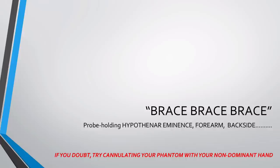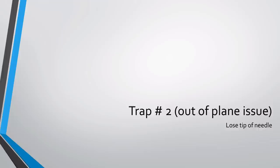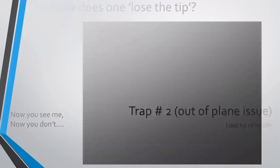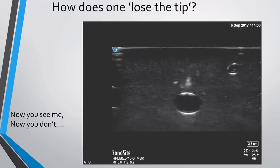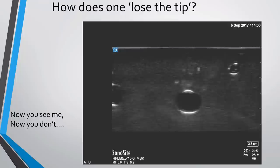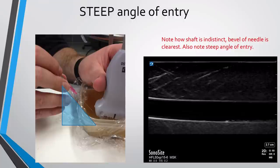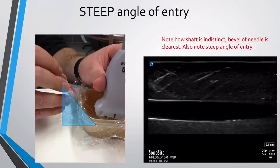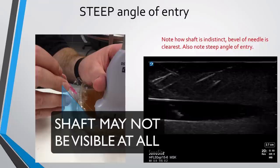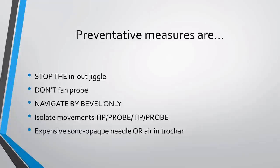Trap number two happens when you lose contact with the tip of the needle. Maybe you had to glance away briefly from the screen, or perhaps you've been using that in-out jiggle, so you start pushing in and out even more to try and find it again. Here we see the flare of the bevel and then it disappears, so you poke around a bit more, push in a bit further, then in desperation fan the probe — and lo and behold, you've hit the bed. Note how the bevel is much brighter than the shaft, particularly when you have such a steep angle of incidence. Ways to avoid this: stop the in-out jiggle, and don't fan the probe because you can lose your orientation with the vessel and the needle.